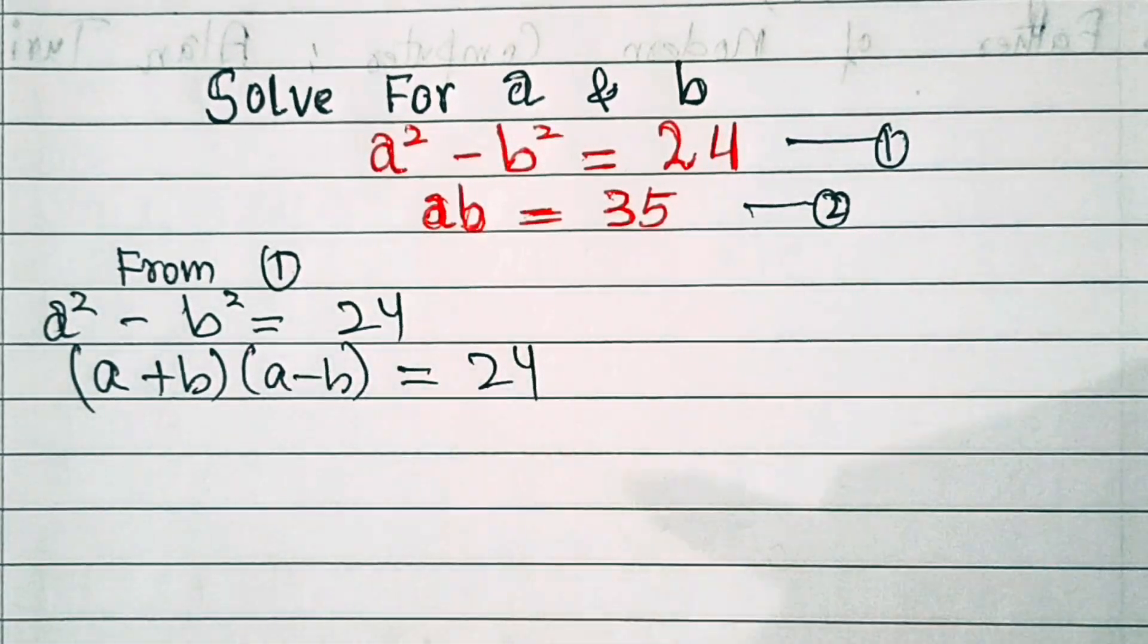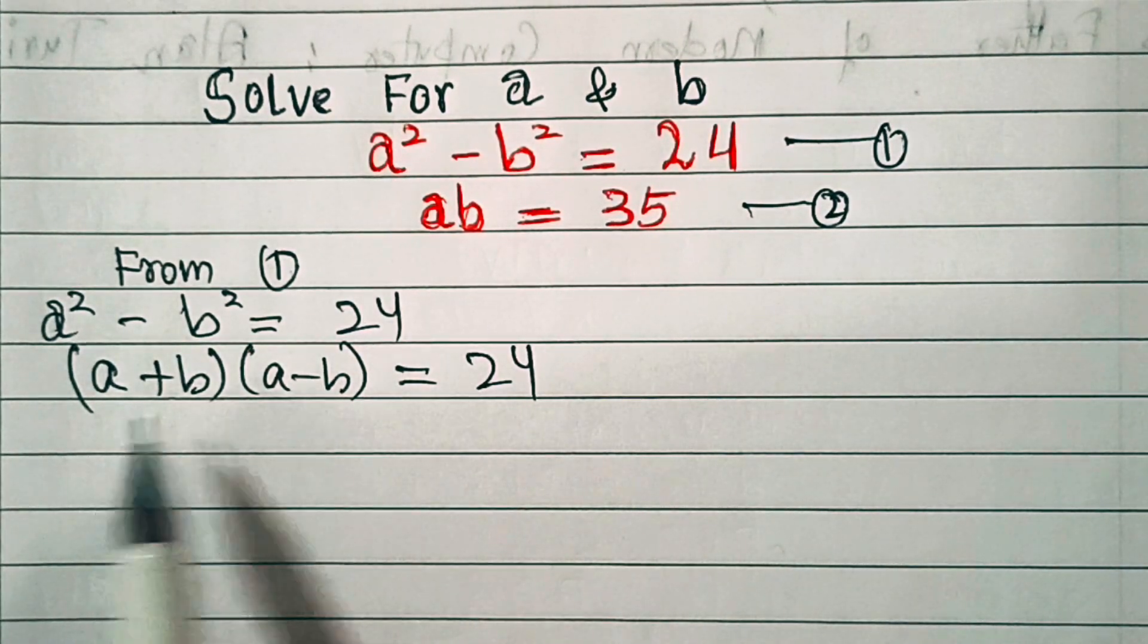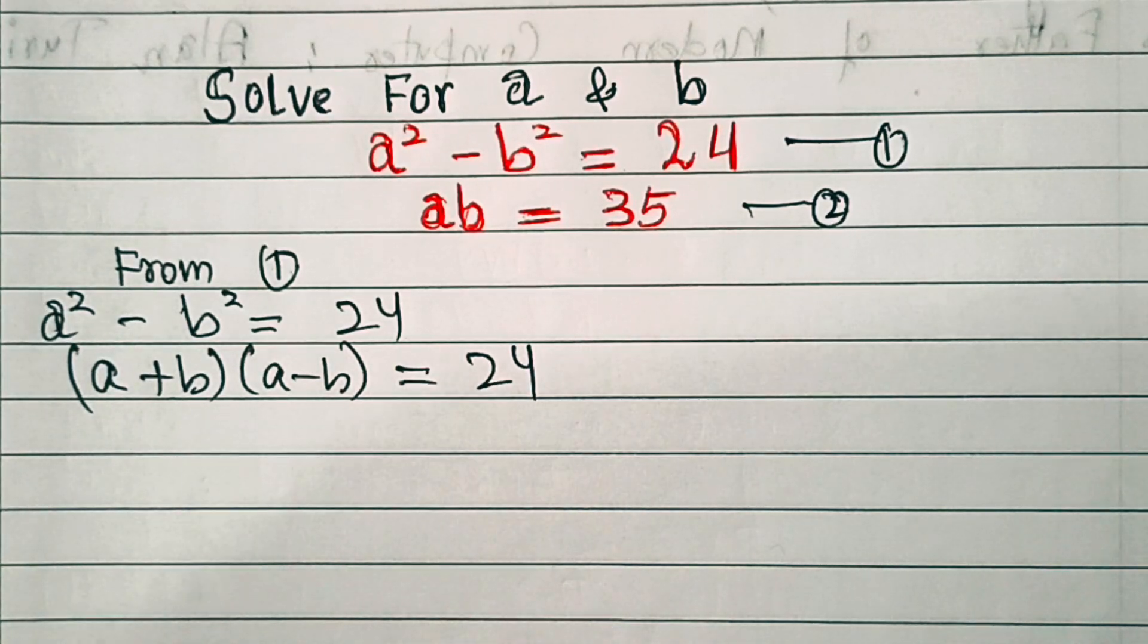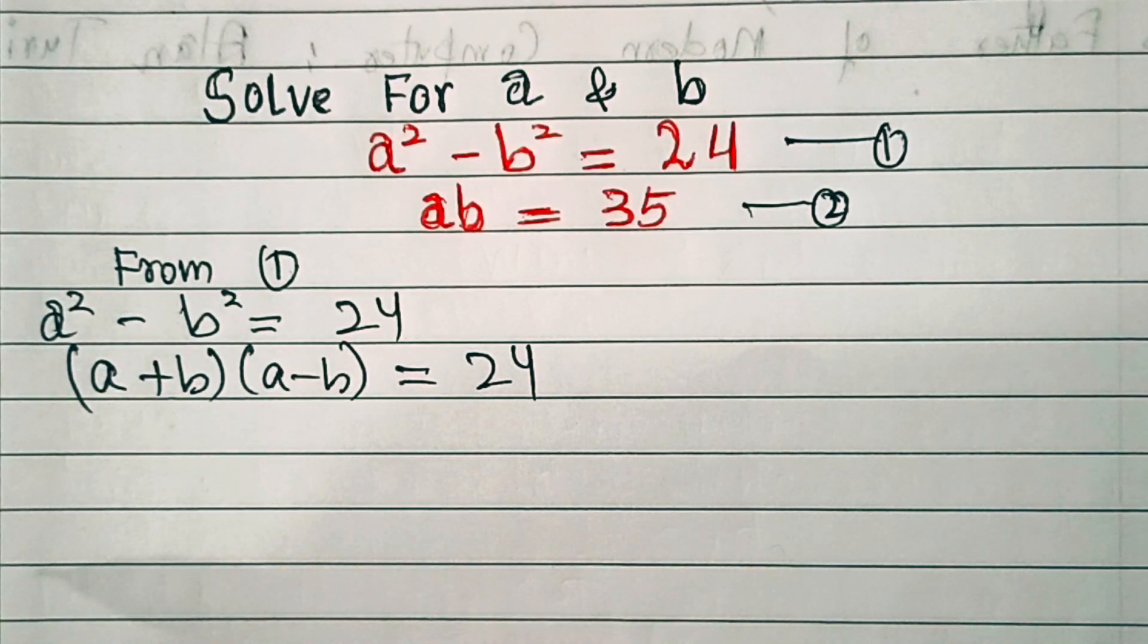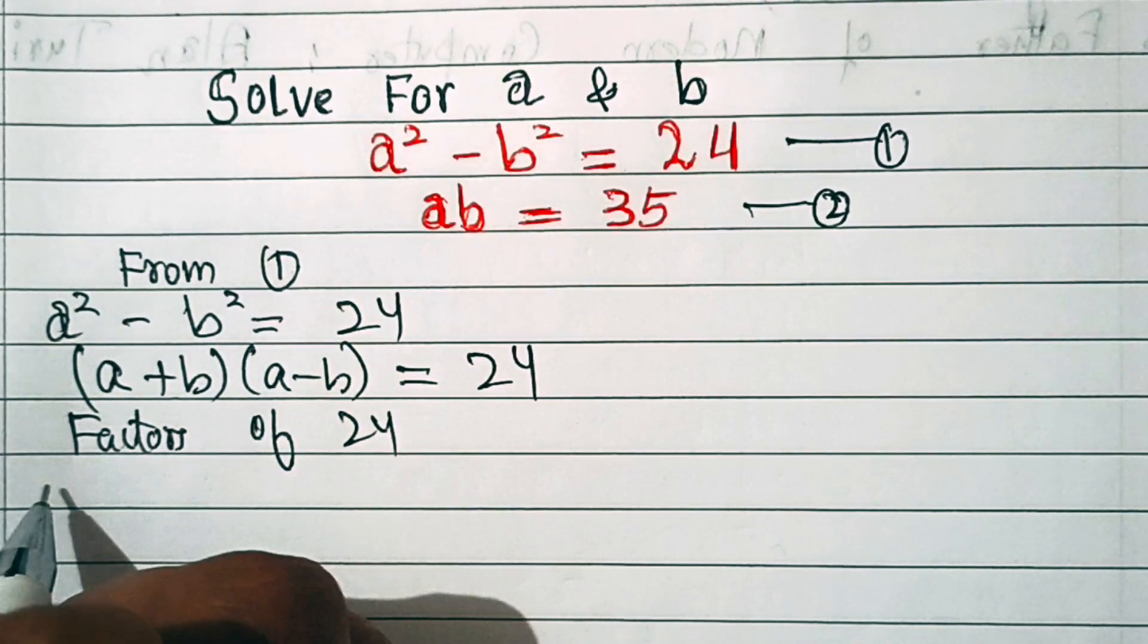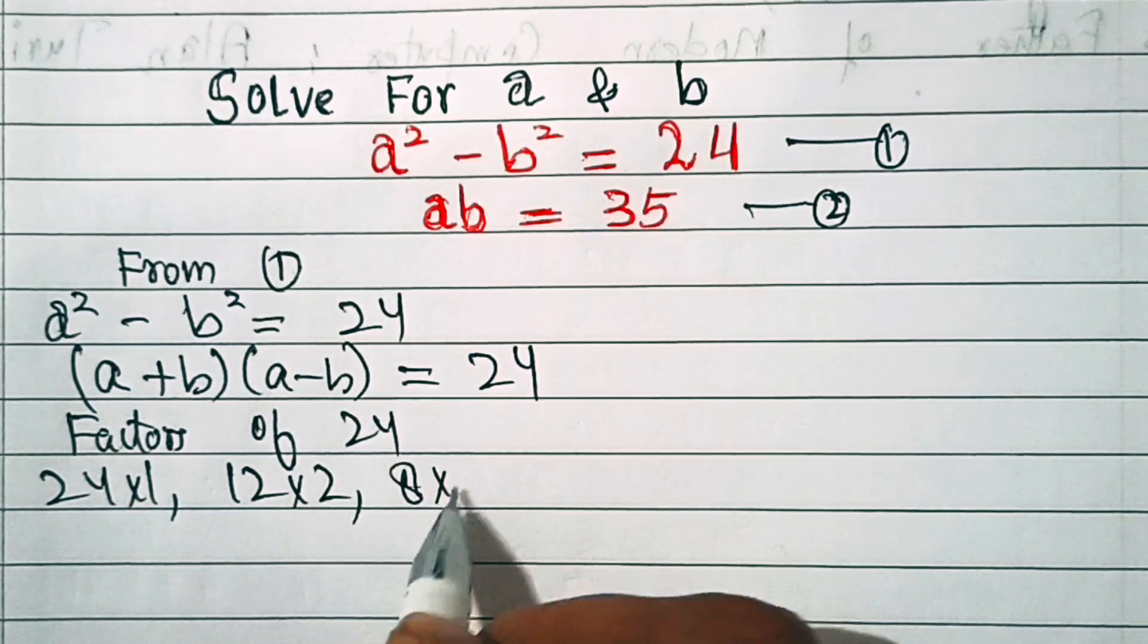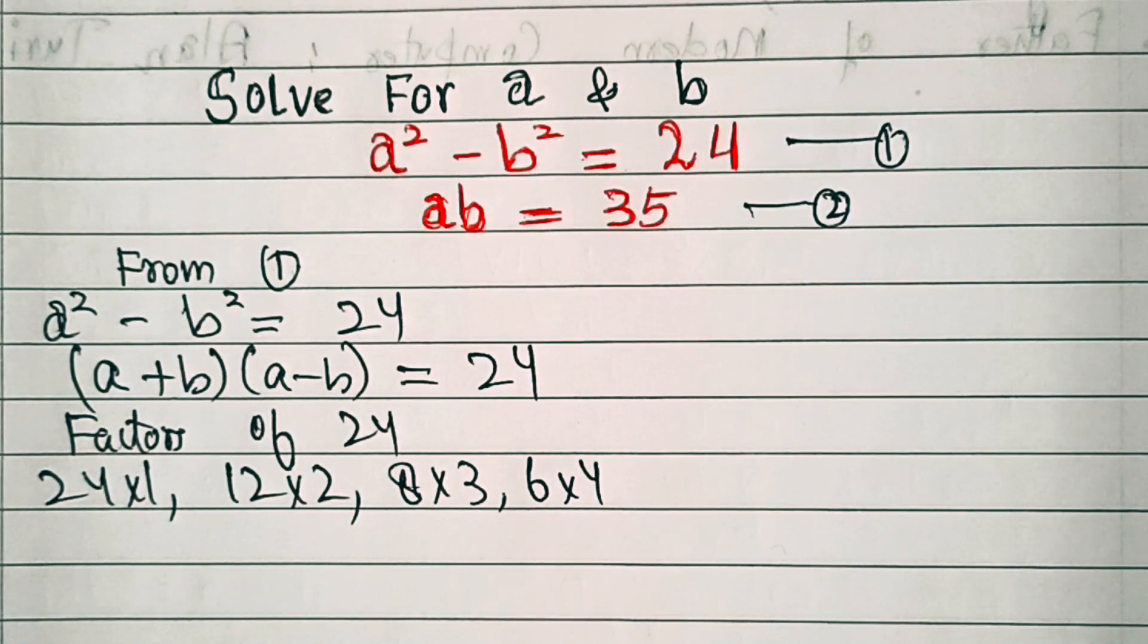Now in order to get the value of a+b and a-b, we need to factorize this number, that is 24. But as you know, there are many ways to factorize 24. We know factors of 24 are 24×1, 12×2, 8×3, and 6×4. So what is the best way to find out the values of a+b and a-b?